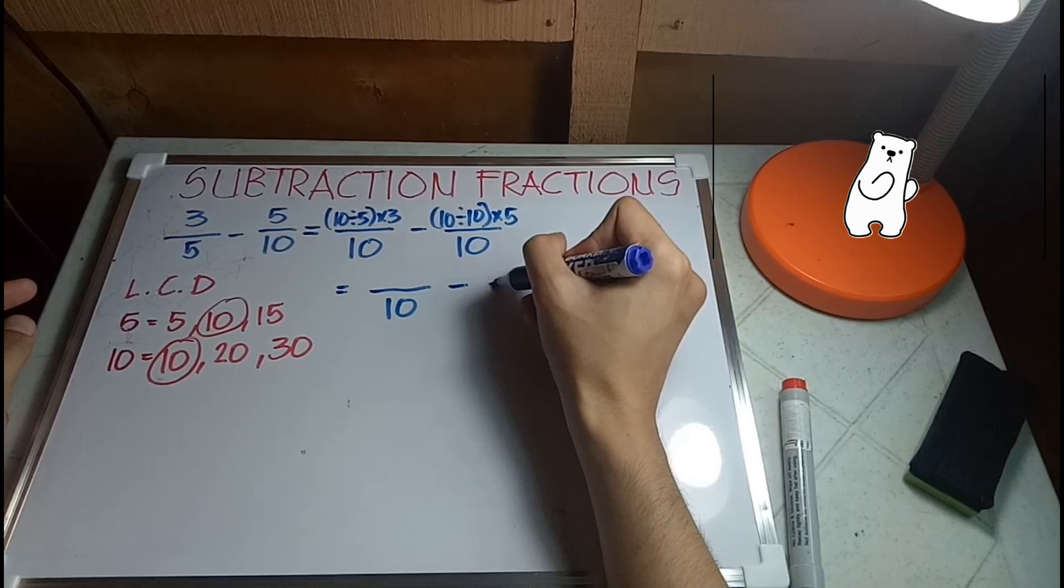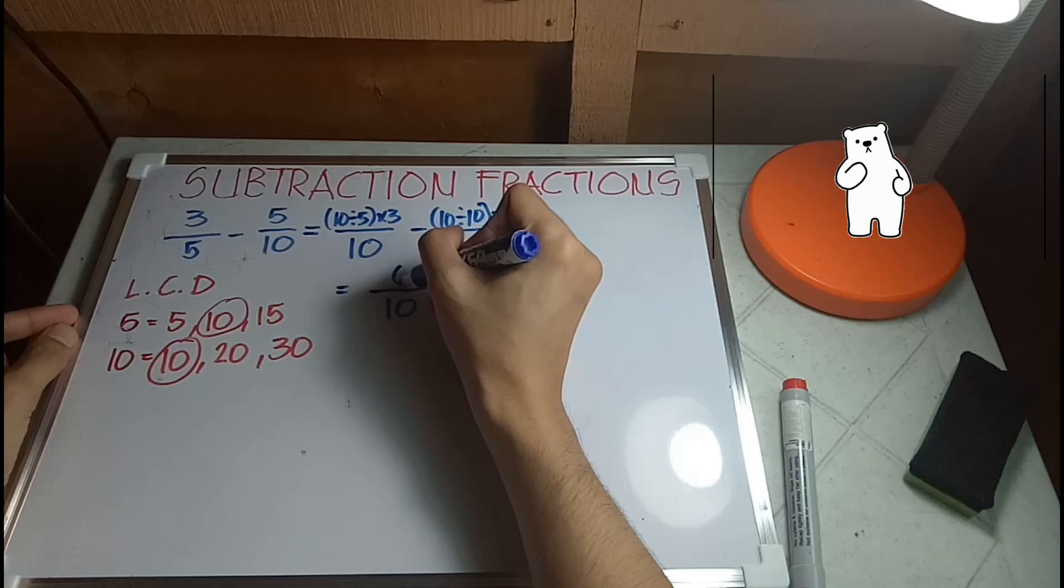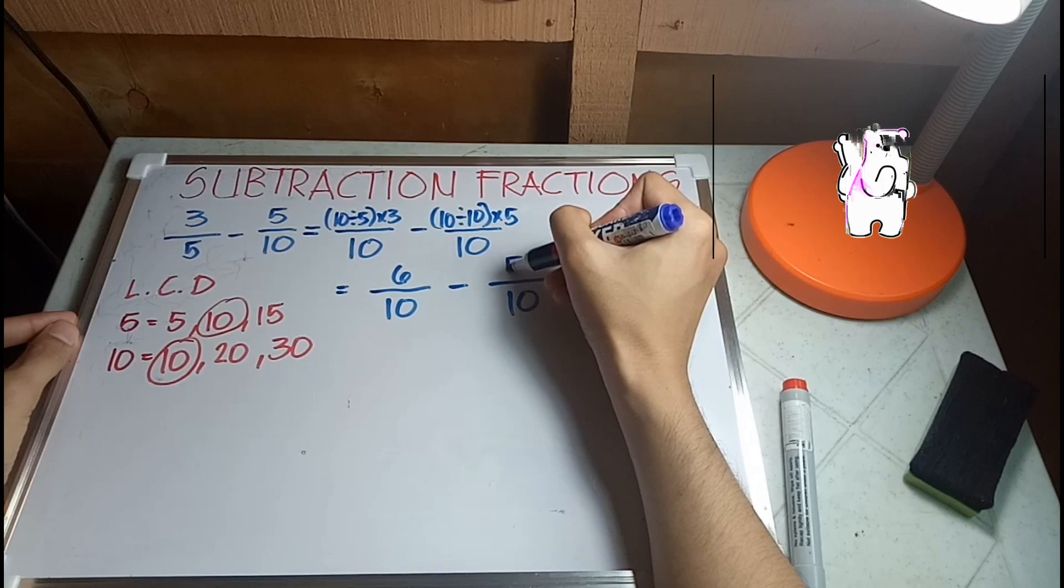So that would be 10 divided by 5 is 2, times 3 is 6. 10 divided by 10 is 1, times 5 is 5.